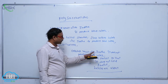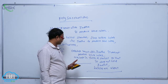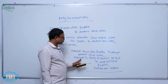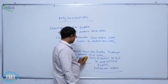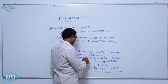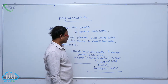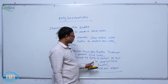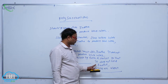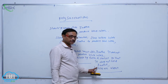Cellulose reacts with iodine but does not produce blue color, because cellulose is a linear structure — cellulose is linear or straight — so it does not hold iodine and does not produce blue color, because helicals are absent.